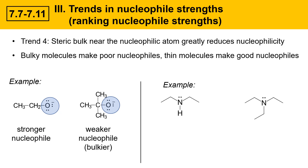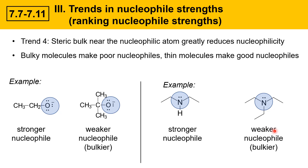Here's an example with nitrogen nucleophiles. On the left, the nitrogen has two carbon groups attached and is more open to approaching carbons and making bonds. On the right, the nitrogen has three carbon groups, increasing the steric bulk near the nucleophilic atom and making it much more difficult for that nitrogen to act as a nucleophile. The molecule on the right is a weaker nucleophile because it's bulkier, while the one on the left is a stronger nucleophile because it's less bulky.